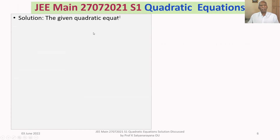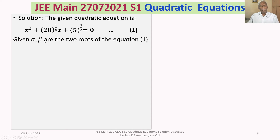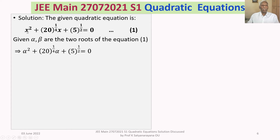We now discuss the solution of the problem in detail. The given quadratic equation is this equation — let's call it equation 1. It is given that alpha and beta are the two roots of this equation. Since alpha is a root of this equation, alpha satisfies it. So wherever there is x, you just write alpha.